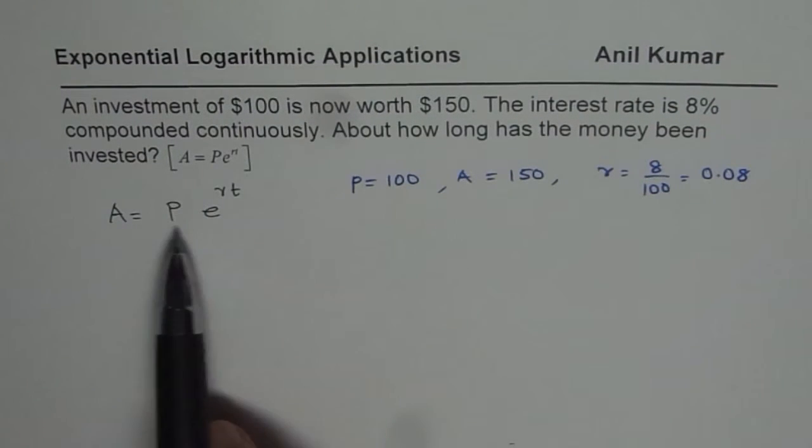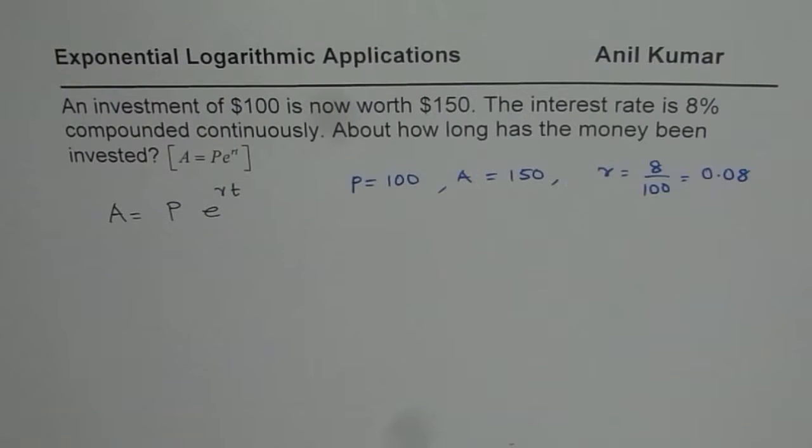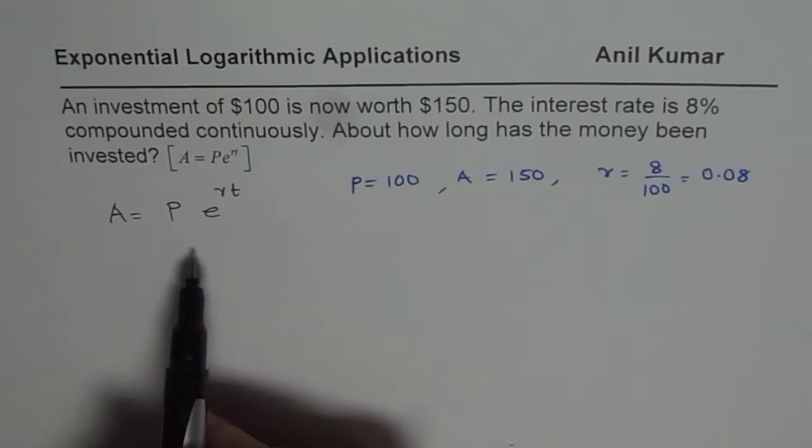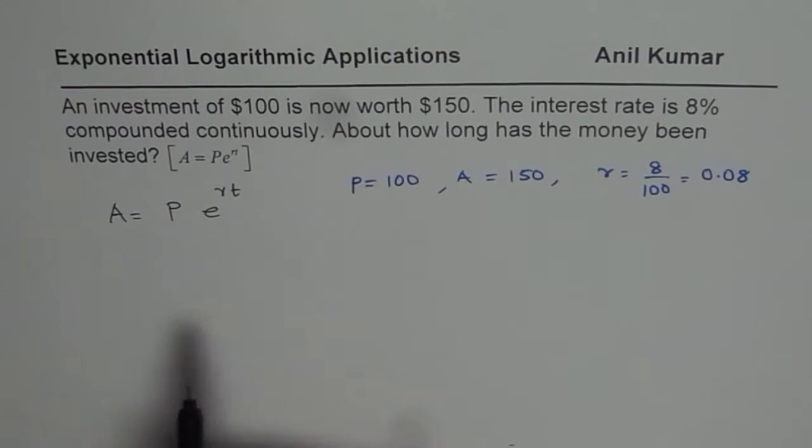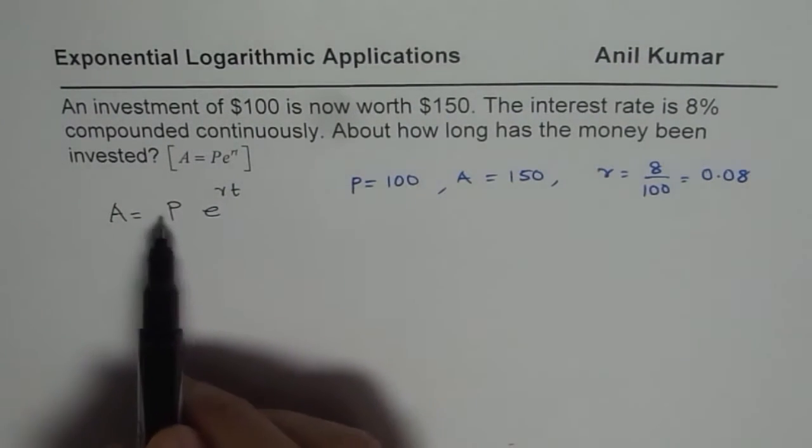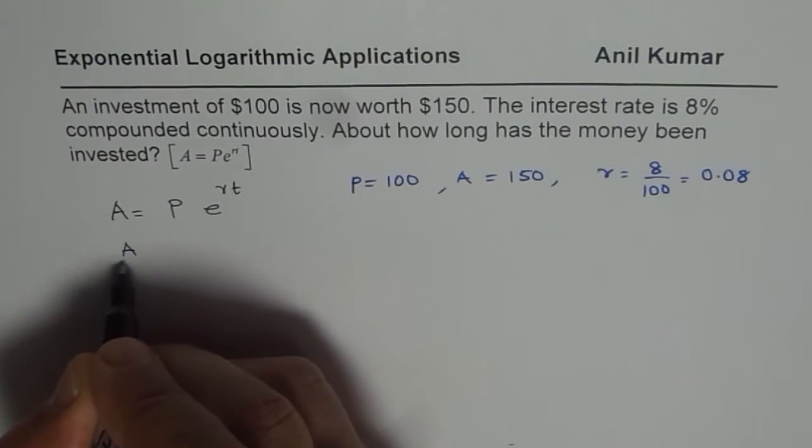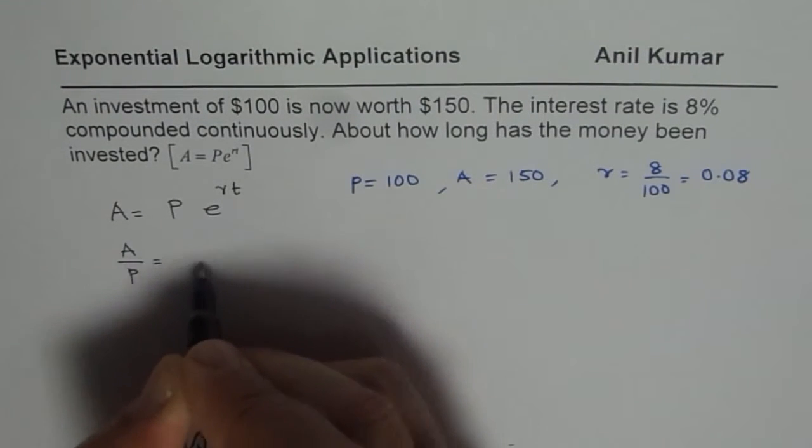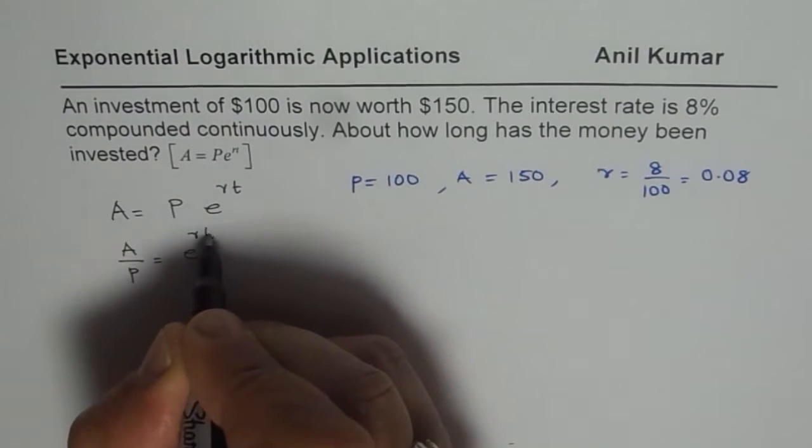So we can always substitute these values and find the value of T. Now the question is, it is in kind of exponent. How do we solve it? So what we will do is, we will just follow some general steps first, write down a formula to solve. To find T, what we can do is divide A by P first. That is the first step. And then we get e to the power of Rt.